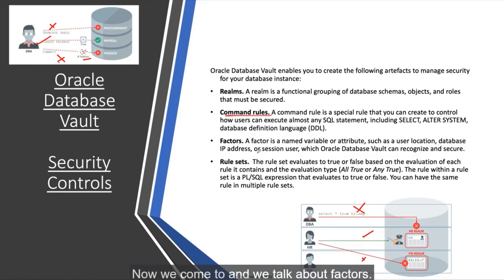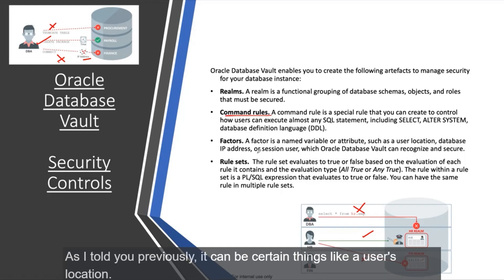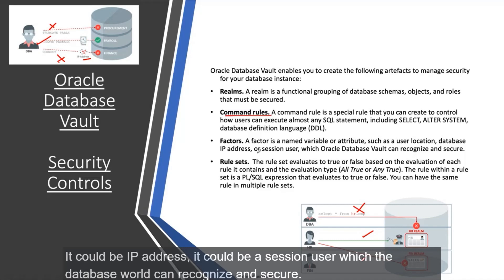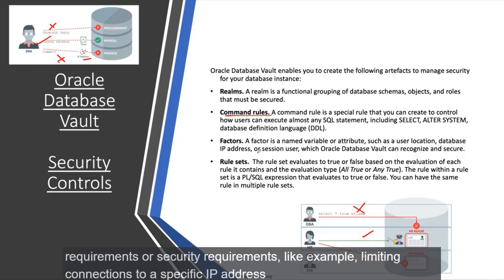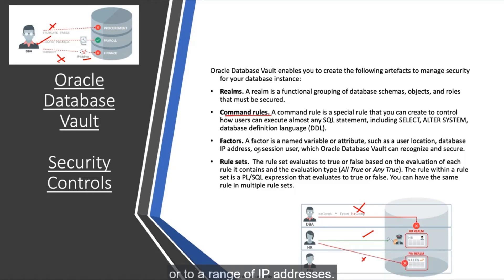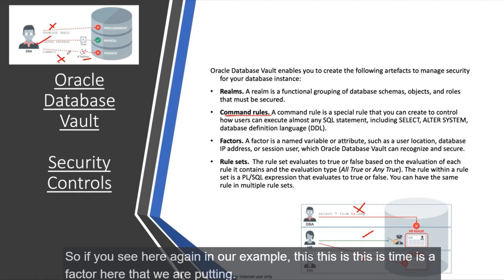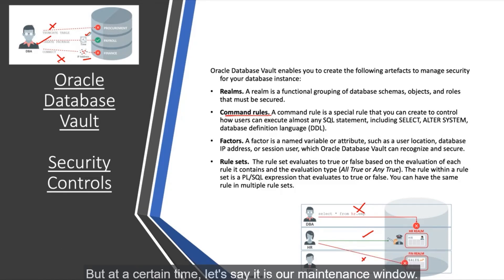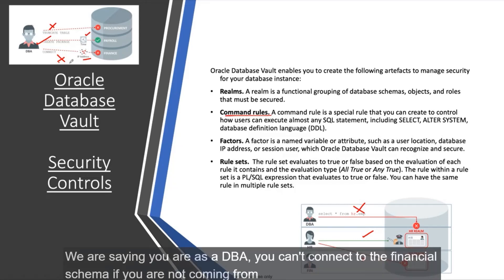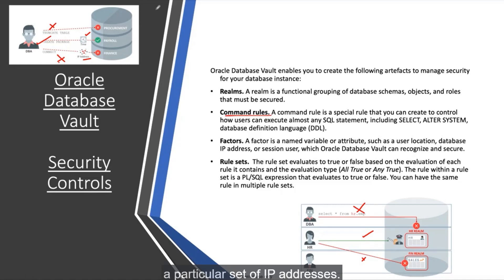Factors are named variables or attributes — such as a user's location, IP address, or session user — that the database world can recognize and use for security. Security admins can define rules based on specific compliance or security requirements, like limiting connections to a specific IP address or range. For example, a DBA might be allowed to create a package on the payroll schema, but only during a maintenance window, or only from a specific set of IP addresses.